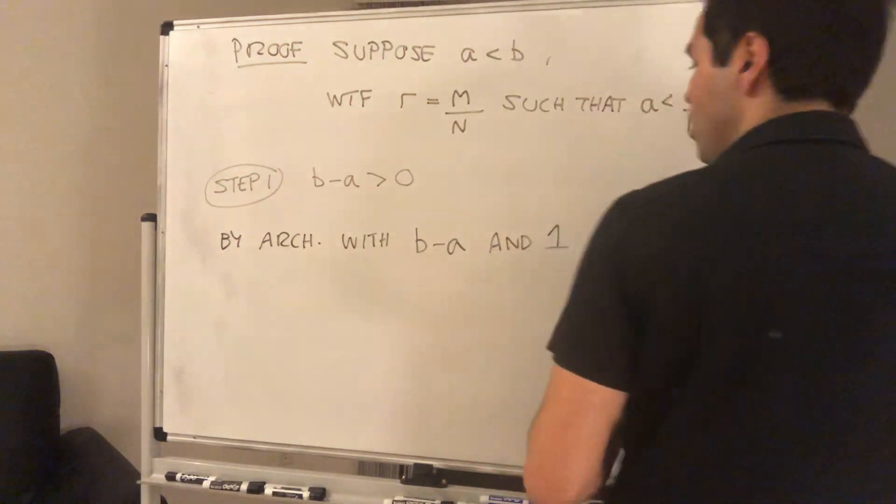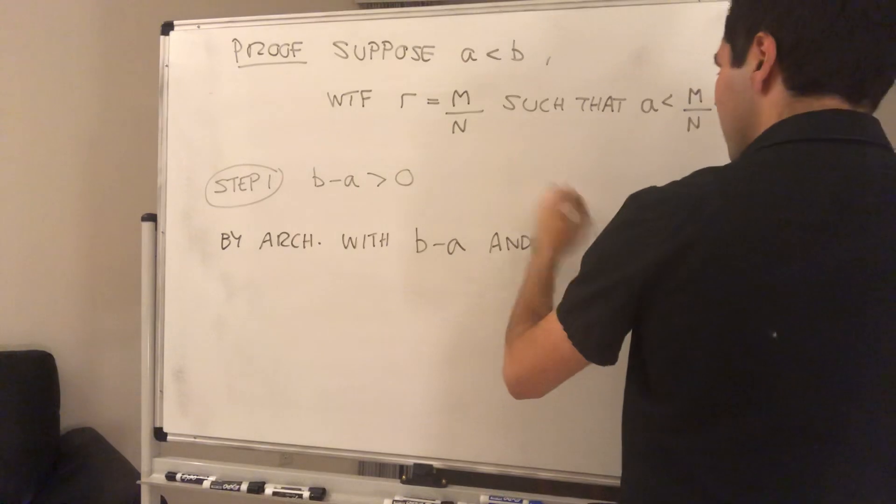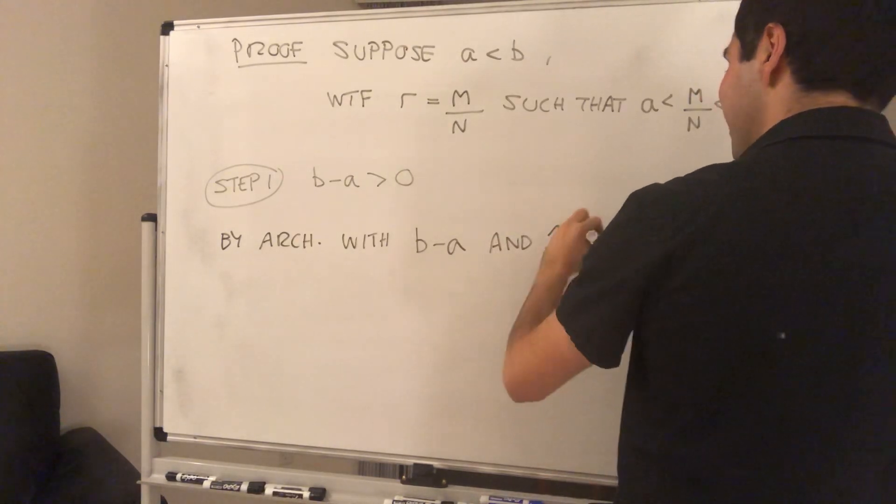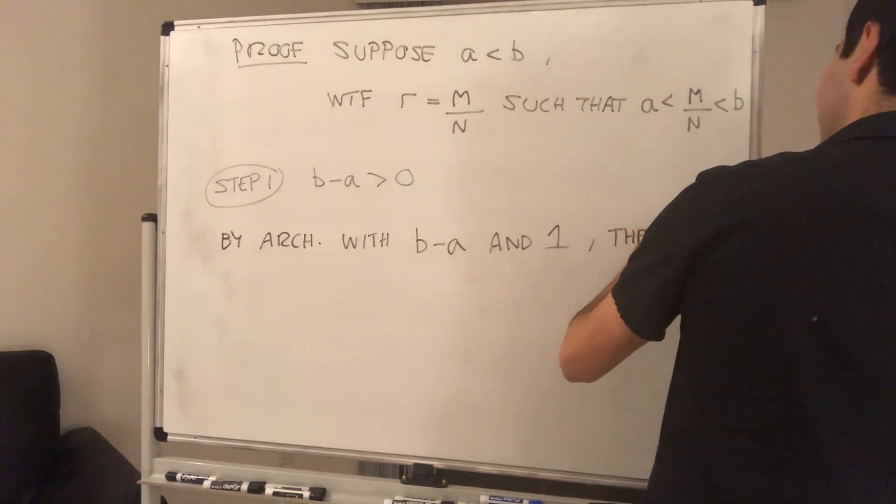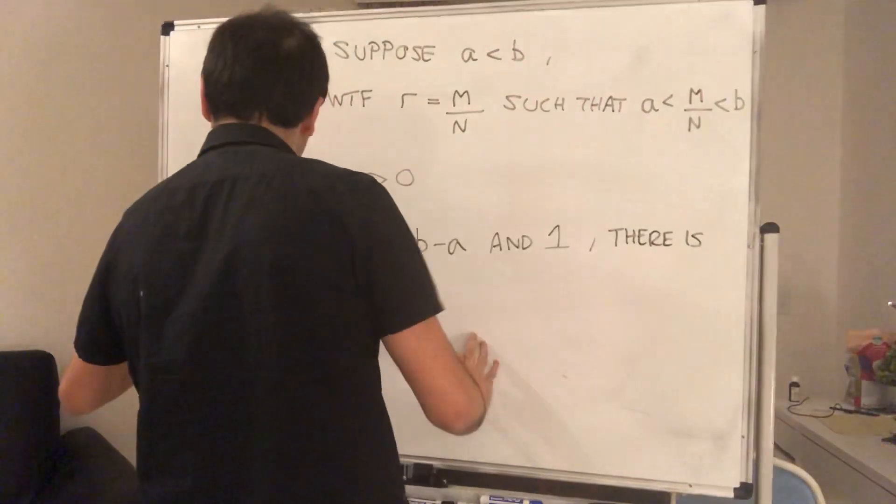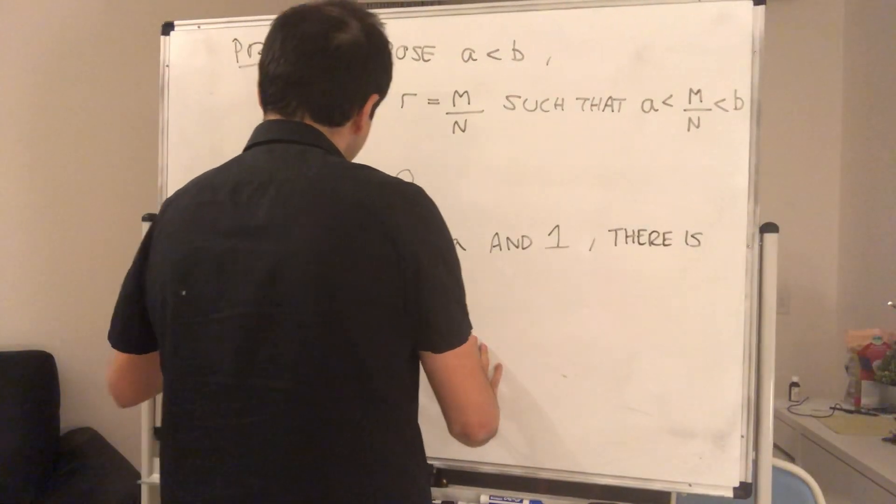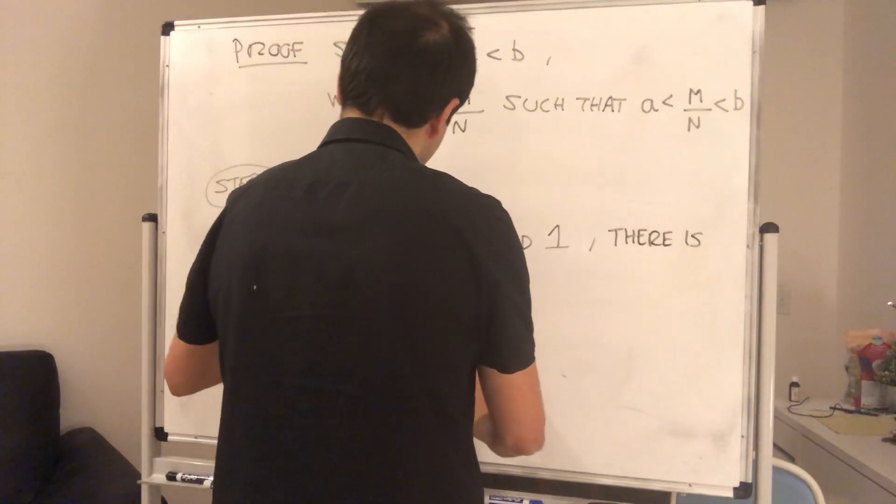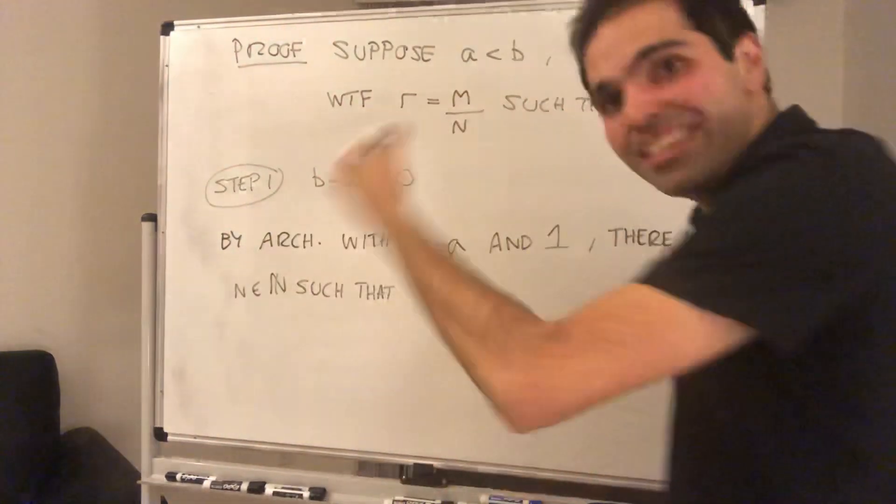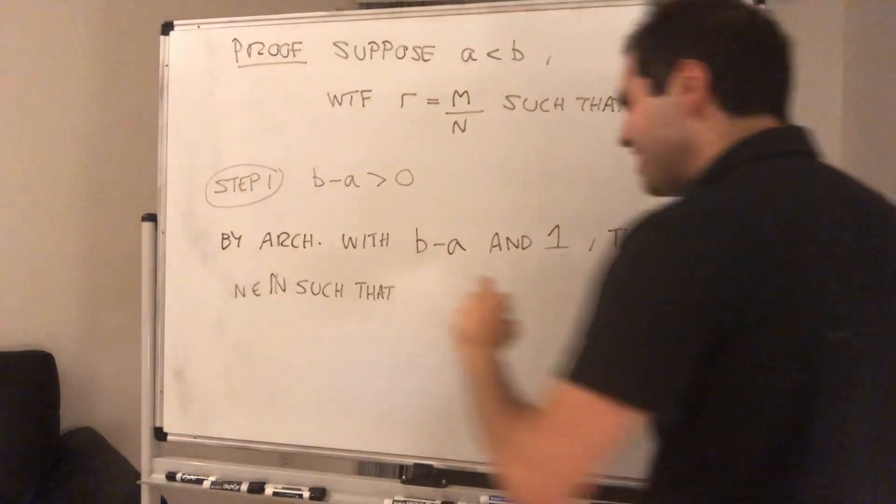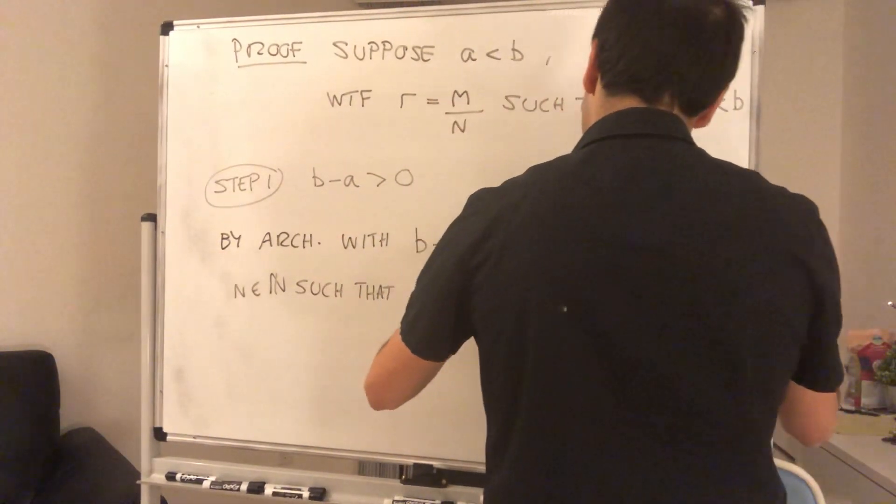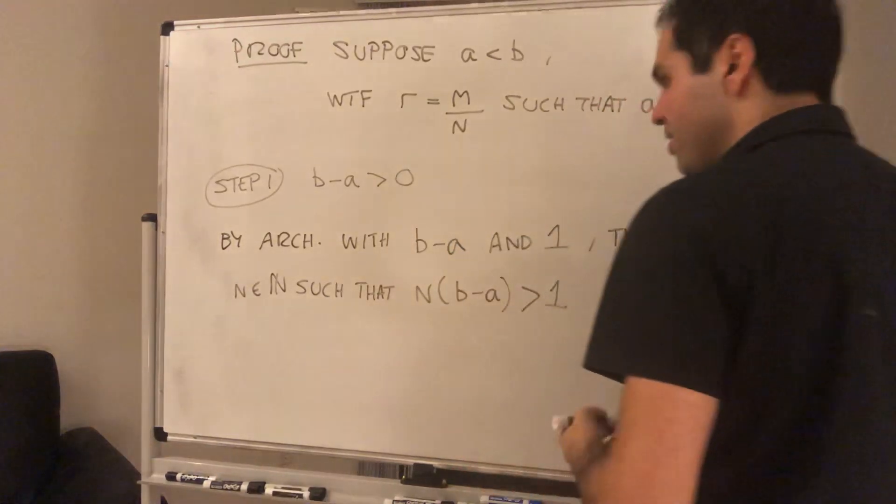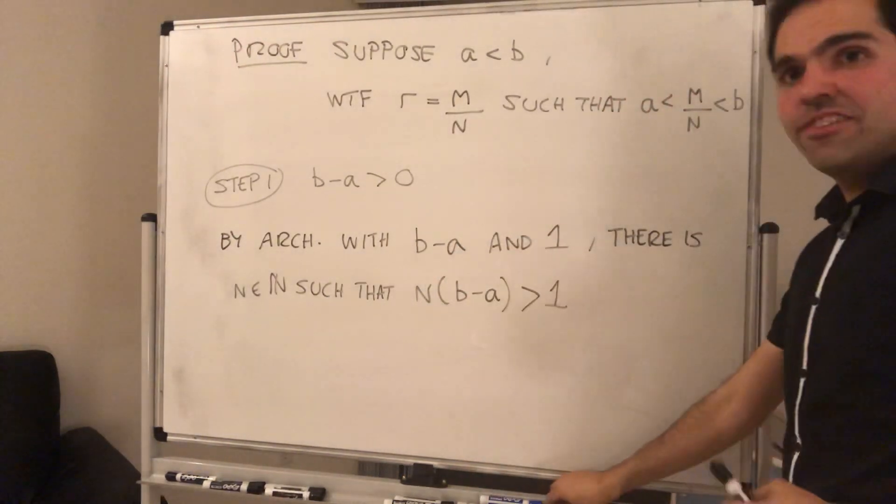and what number do we want to exceed? We want to exceed, let's say, the number 1. What does the Archimedean property say? There is a positive integer n such that if you take b minus a and add them up n times, you eventually exceed the number 1. And voila, there is your n.